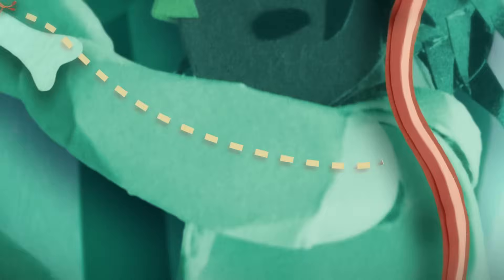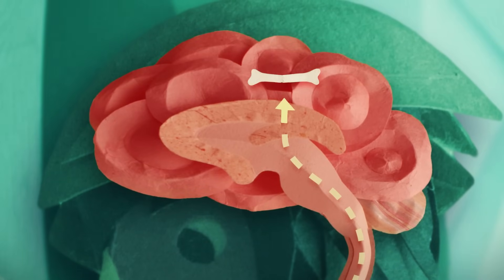Special cells called neurons send a signal through the spinal cord to the brain, which interprets the signal as pain.